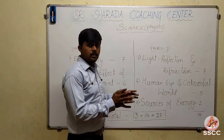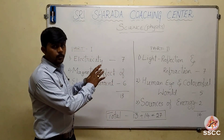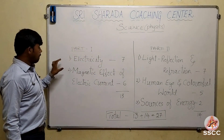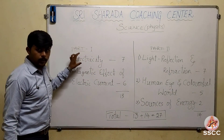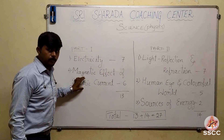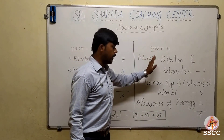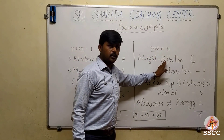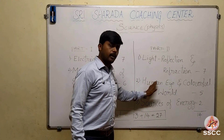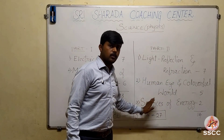The state board divides the given chapters into two parts. In part one, you have Electricity and Magnetic Effect of Electric Current. In the part two textbook, you have Light Reflection and Refraction, Human Eye and the Colorful World, and Sources of Energy.